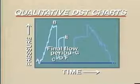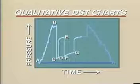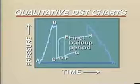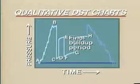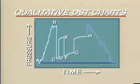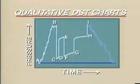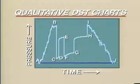At the end of the final flow period, the tool is shut in at point G, and the final build-up period takes place from G to H. The packer is then released at H. The hydrostatic pressure caused by the mud column is again felt by the pressure recorder, and the tool is retrieved from the hole from I to J.